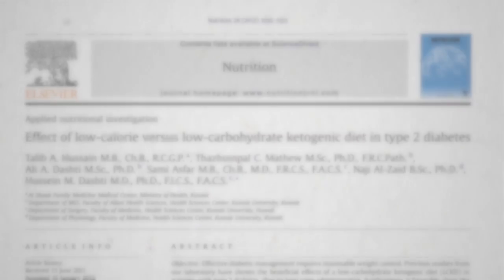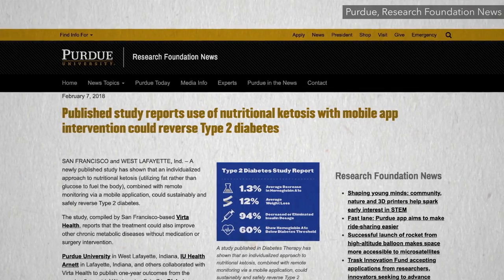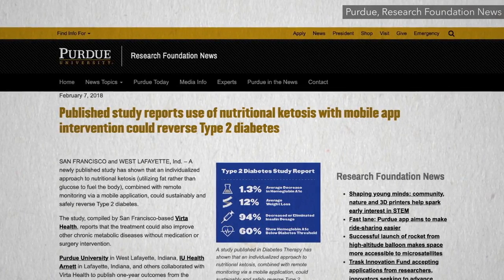Ketogenic diets can certainly lower blood sugars better than conventional diets, so much so. There's a keto product company that claims ketogenic diets can reverse diabetes,